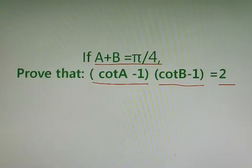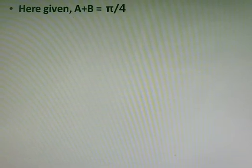So let's see how we can make left hand side and right hand side equal in this question. First of all, we should write the given, and the given in this question is A plus B is equals to pi by 4.